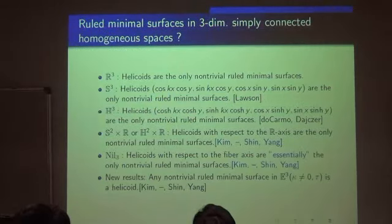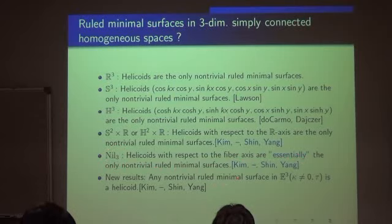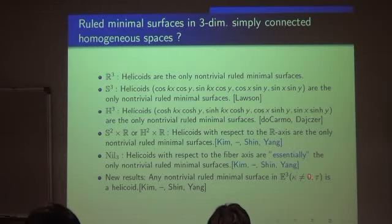Another result: in NIL-3, which I will explain later, essentially the same conclusion holds — this is our result, which will appear in Pacific Journal. And we have a new result in another space, with the same conclusion: the helicoids are the only non-trivial examples of ruled minimal surfaces.